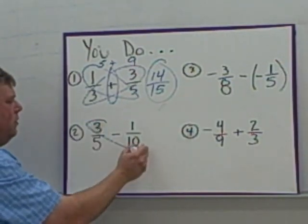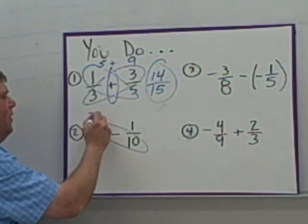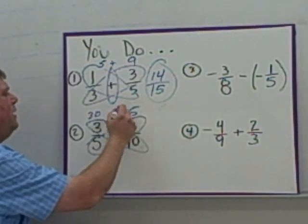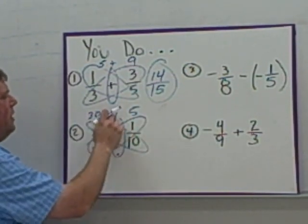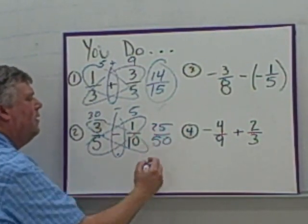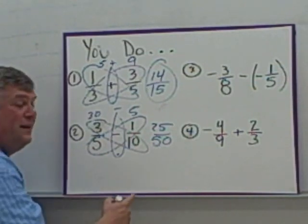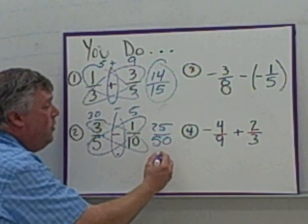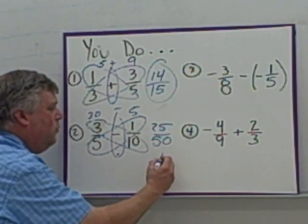For number two, 3 × 10 = 30. 5 × 1 = 5. Bring the minus sign up. 30 - 5 = 25. 5 × 10 = 50. And hopefully we recognize that 25 is one-half of 50, so this does simplify to 1/2.